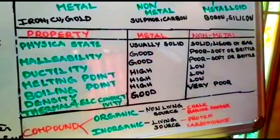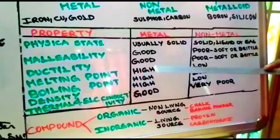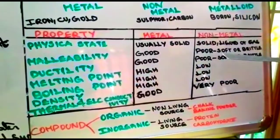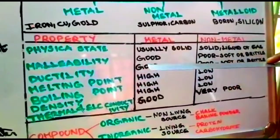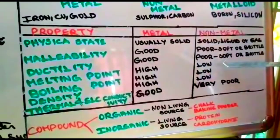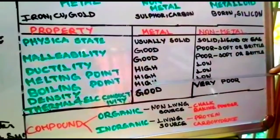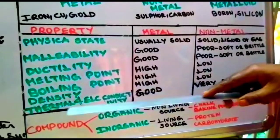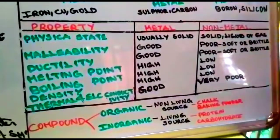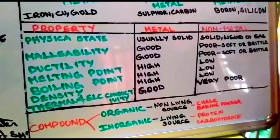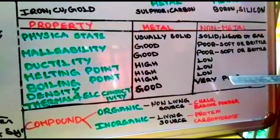Ductility is when it can be changed into thin wire form. In the case of metal, ductility is good, but for non-metal it is very poor, soft, or brittle. Melting point for metal is very high, for non-metal it is low. Boiling point is very high for metal, very low for non-metal. Density for metal is very high, for non-metal very low. When you come to thermal and electrical conductivity, metals conduct good heat and electricity, whereas non-metals are very poor conductors.